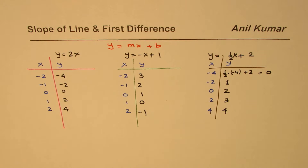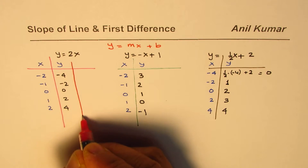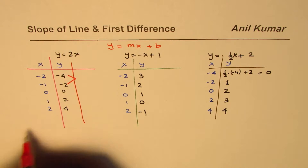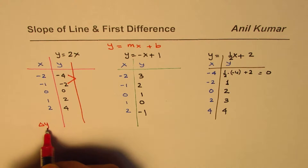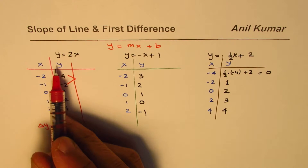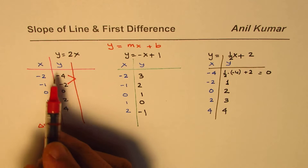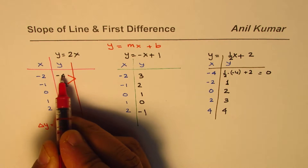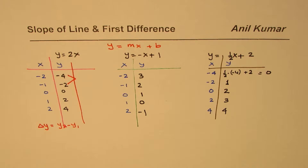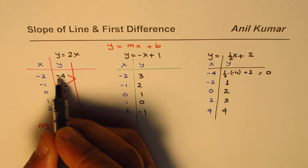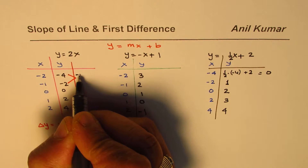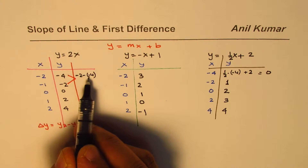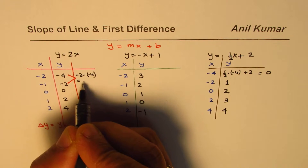Now let us see how to find the first difference. The first difference is the difference between consecutive terms — we designate it as delta y (Δy). It represents the change in the dependent variable y, written as y₂ minus y₁: the next value minus the previous value. That is what first difference is.